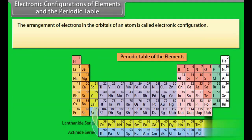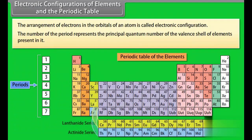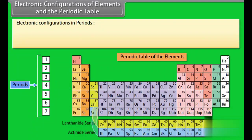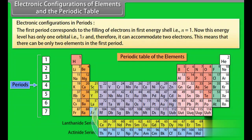Electronic configurations of elements and the periodic table: The arrangement of electrons in the orbitals of an atom is called electronic configuration. The number of the period represents the principal quantum number of the valency shell of elements present in it. The first period corresponds to the filling of electrons in the first energy shell, i.e., n = 1. This energy level has only one orbital, 1s, and can accommodate 2 electrons. Therefore, there can be only 2 elements in the first period.